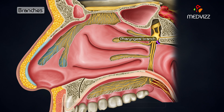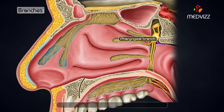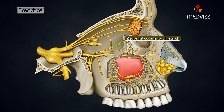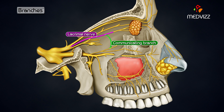The pharyngeal branch passes to the palatovaginal canal and supplies the part of the nasopharynx behind the auditory tube. The lacrimal branch: the postganglionic fibers pass back into the maxillary nerve to leave it through the zygomatic nerve and its zygomaticotemporal branch, forming a communicating branch to the lacrimal nerve to supply the secretomotor fibers to the lacrimal gland.